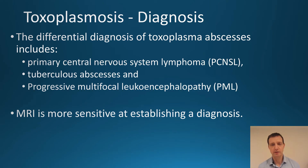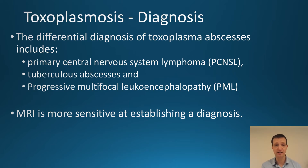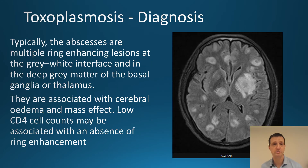The differential diagnosis of Toxoplasmosis includes primary central nervous system lymphoma (PCNSL), tuberculosis abscesses, and progressive multifocal leukoencephalopathy (PML). MRI is more sensitive at establishing a diagnosis and is always the imaging modality of choice.